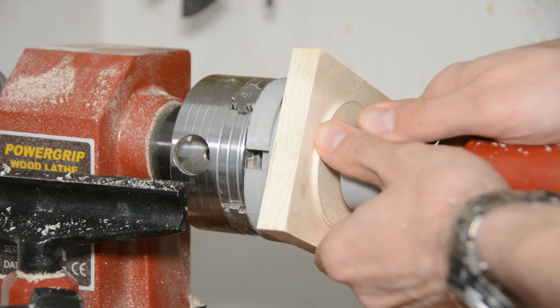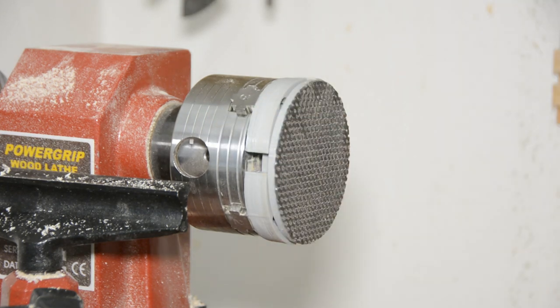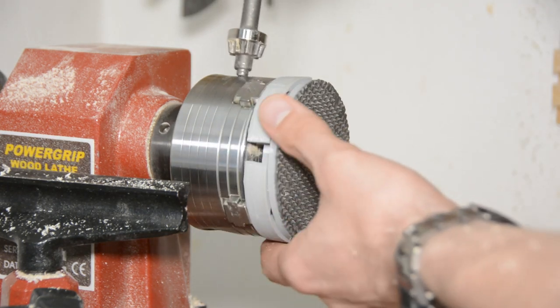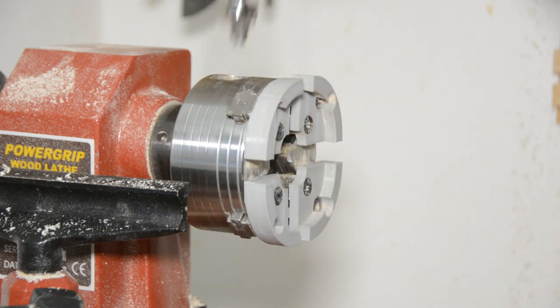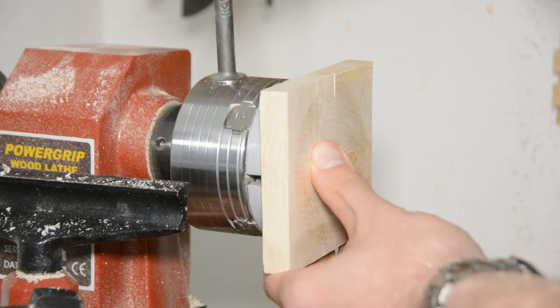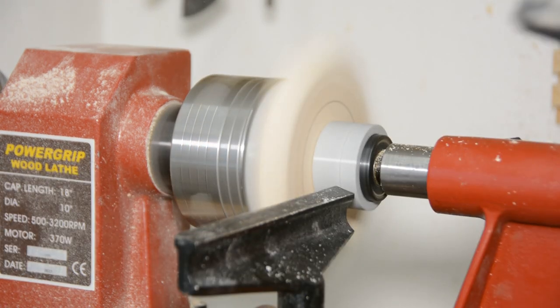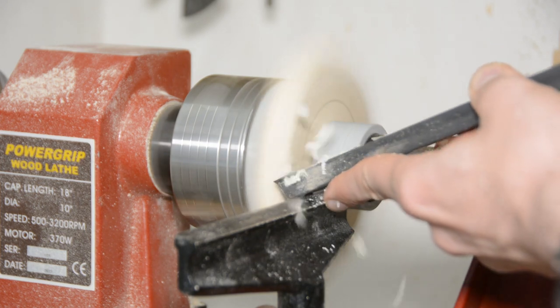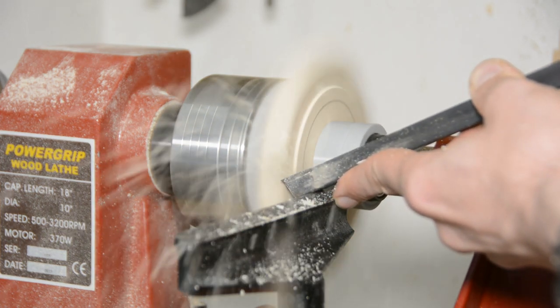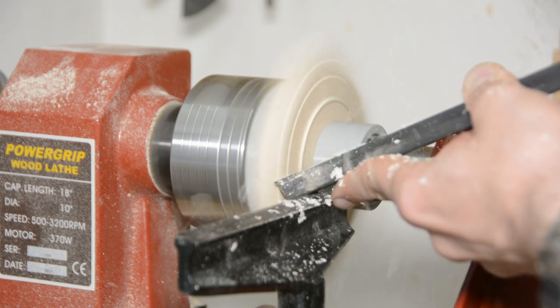Next we remove the rubber coated plate and fix the tenon in the chuck. I can now work on the underside of the lid. As before, I create a tenon and while still supported by the tailstock, turn the piece round.